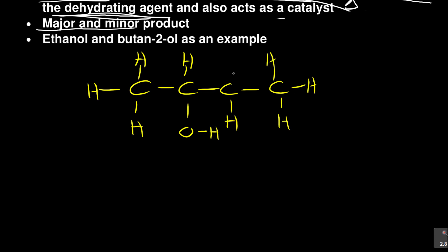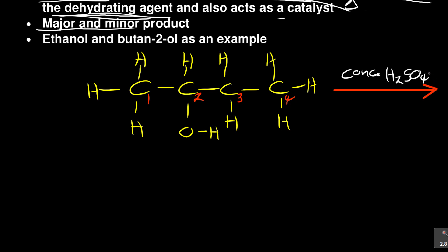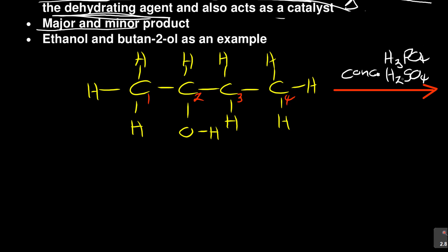Let's name the carbons: carbon number one, carbon number two, carbon number three, and carbon number four. Don't forget what you are reacting this with — in the presence of concentrated H₂SO₄, or H₃PO₄, or Al₂O₃. The Al₂O₃ is not really concentrated — it's aluminum oxide. Try to use sulfuric acid or phosphoric acid. And then you need heat.